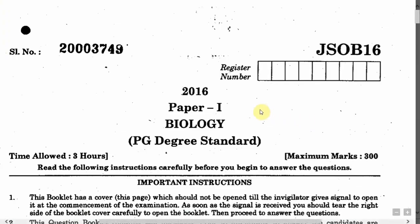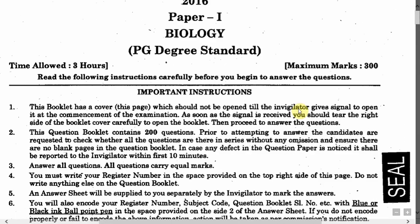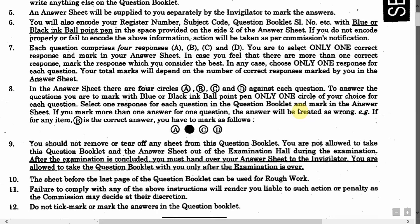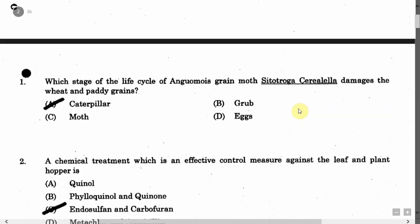This is the question paper of biology for the post of Junior Scientific Officer in Forensic Science Laboratory, Biology Division, including the Serology division. In this question paper, there are totally 200 questions. We will divide it into two parts — in the first part we have 100 questions, and in the next video we have the remaining 100 questions.